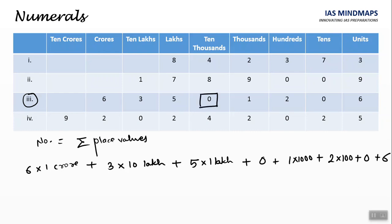Now focus on this 0, and this 0. For 0, we have both face value and place value as 0.